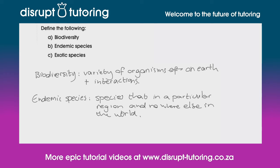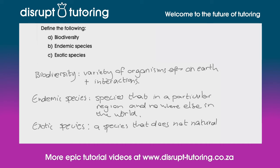Last one — exotic species. This refers to a species that does not naturally occur in an area. And there are some basic definitions for you.